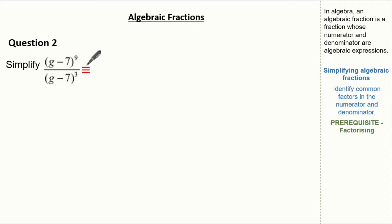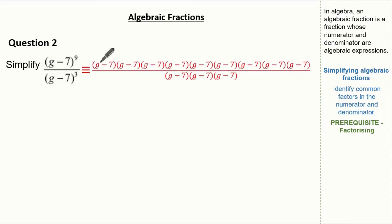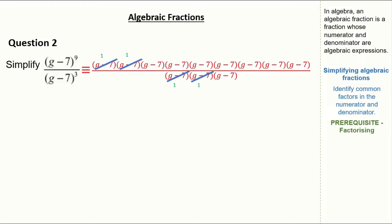I know this is equivalent to (g−7) nine times. I also know this is (g−7) three times. Just like we did before, let's cancel out our factors. Cancelling out our factors gives us a final answer of (g−7) to the power of 6.